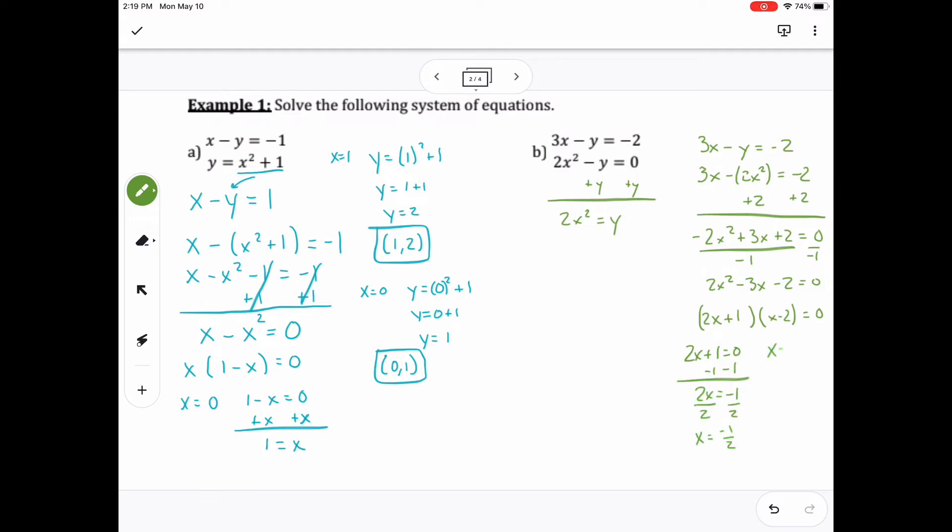And then I set those both equal to 0 and solve. So I get negative 1 half and I get 2. And then just like the last one, I'm going to plug those in to see what y values I get using the equation that I set up.